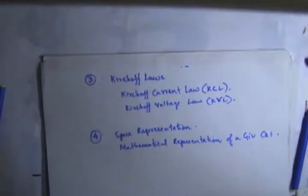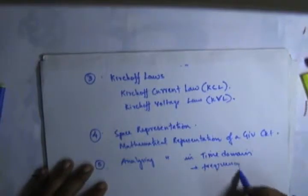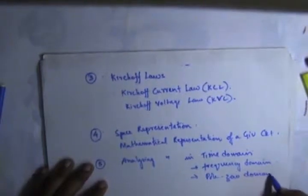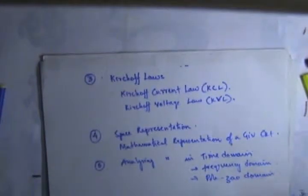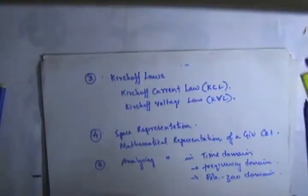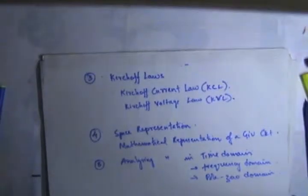After that we move into analyzing the mathematical representation of a circuit in different domains — it may be time domain, frequency domain analysis, or the pole-zero domain. Analyzing a given circuit's mathematical representation in time domain, frequency domain, and pole-zero domain is discussed in the fifth video of the series, including how we convert from one domain to another.